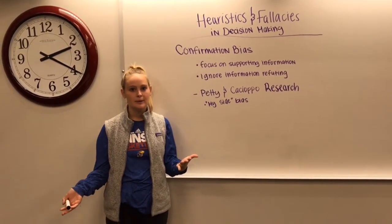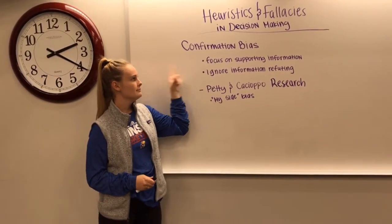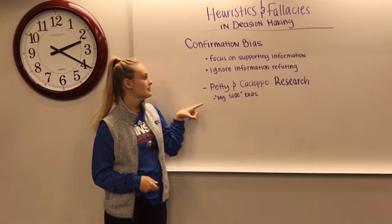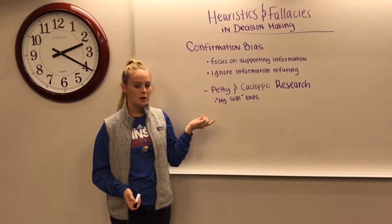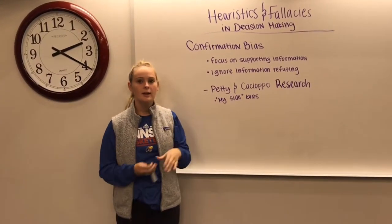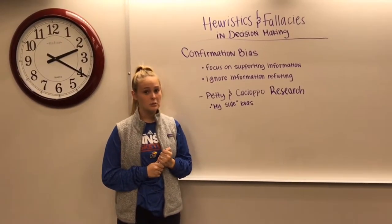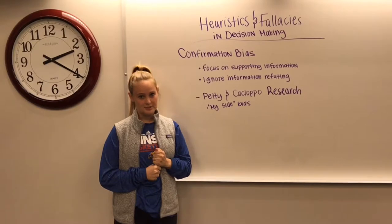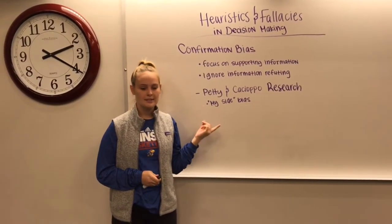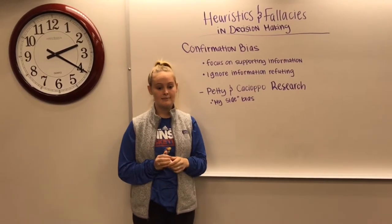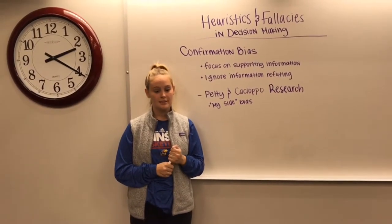Next, we'll talk about confirmation bias. Confirmation bias is the fact that people focus on information that supports their beliefs, rather than information that refutes their beliefs. In fact, Petty and Cassioppo found that people seek and evaluate evidence that confirms their beliefs, and ignore information that undermines their beliefs. Next, we're going to talk about my side bias. My side bias is the fact that people seek and evaluate evidence that supports their prior political, religious, and ethical beliefs.